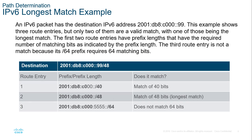For IPv6, we do the exact same thing — we're breaking down the host bits and seeing which ones match. Here we have 40 bits, 48 bits, and 64 bits. The 64-bit entry does not match, so we look at the 48-bit entry. Those do match. Between the 48-bit entry and the 64-bit entry, the values 5555 do not line up to the destination, so that route does not count. The longest match is route entry 2 because of the 48 bits that line up.